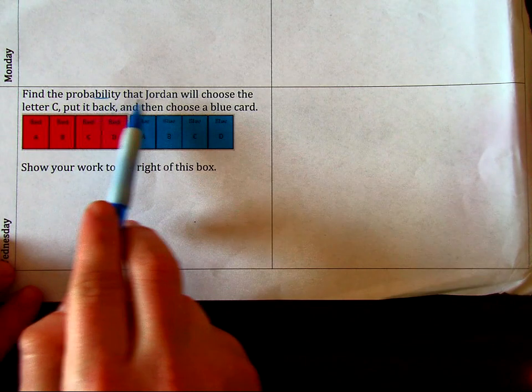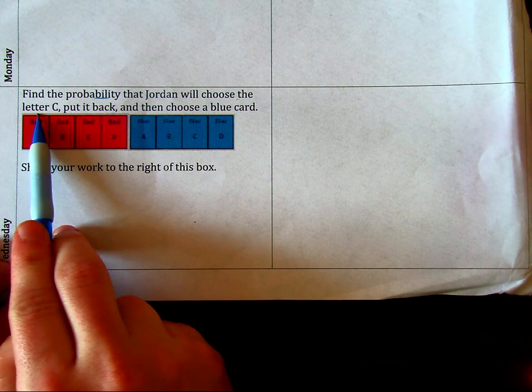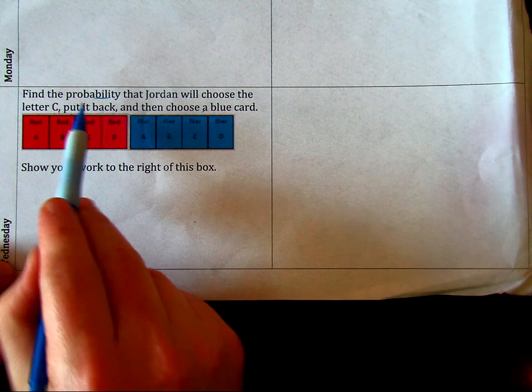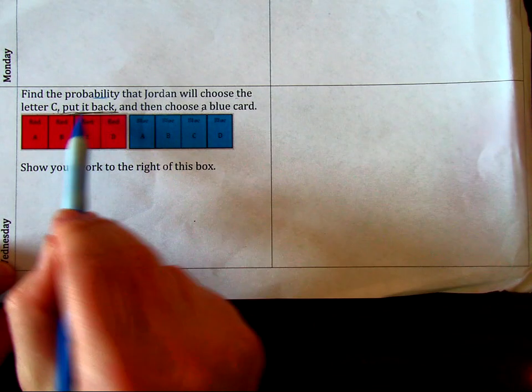It says, find the probability that Jordan will choose the letter C, a card with the letter C on it, put it back, and then choose a blue card. And again, you can kind of see that keyword, put it back.